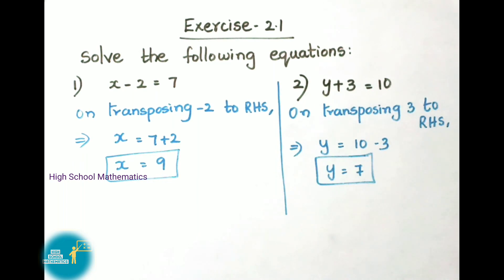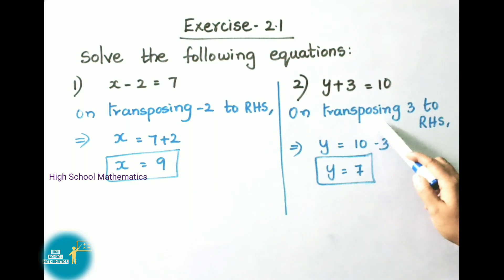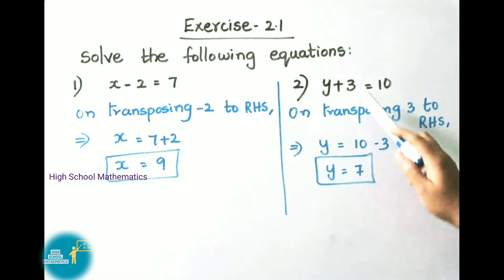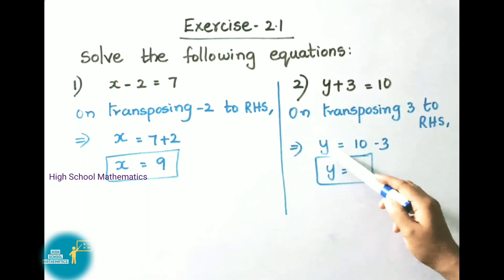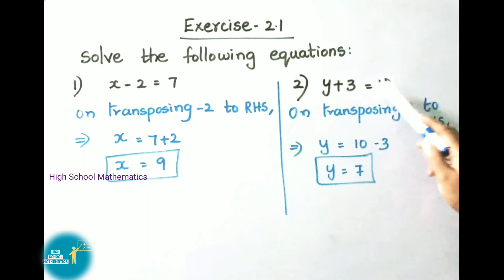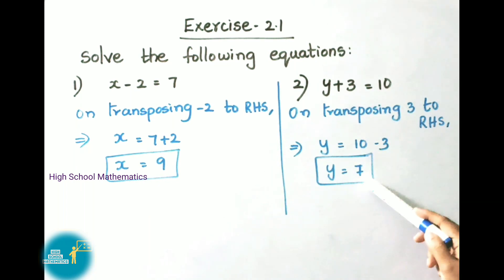See now question number 2: y plus 3 equals to 10. Given equation is y plus 3 equals to 10. To remove plus 3 we are going to do transposing. On transposing 3 to RHS, plus 3 becomes minus 3. That implies y equals to 10 minus 3, therefore y equals to 7.